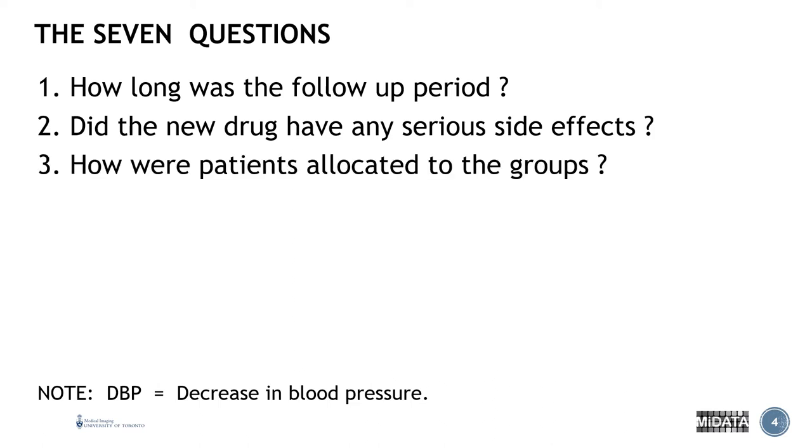Three, how were patients allocated to the groups? So what are we kind of hinting on here? Well inevitably if there are certain patients that are going to respond better or worse to a given intervention or treatment, if you allocate the patients to groups by choice, you are introducing essentially a selection bias.